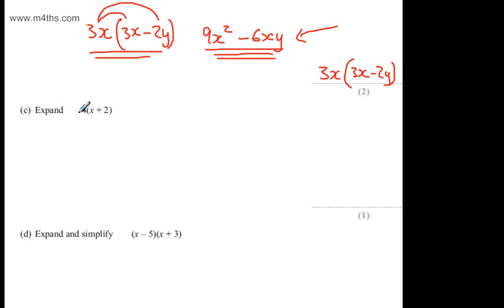For one mark in part C, we need to expand 4 lots of x + 2. Everything on the outside by the inside. So we're going to have 4 lots of x + 4 lots of 2, which is going to give me 4x + 8.